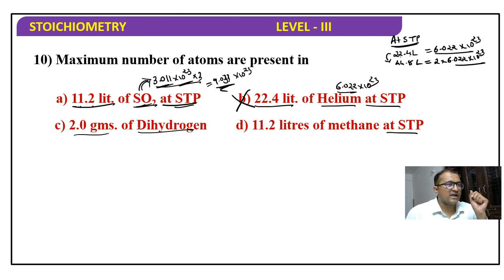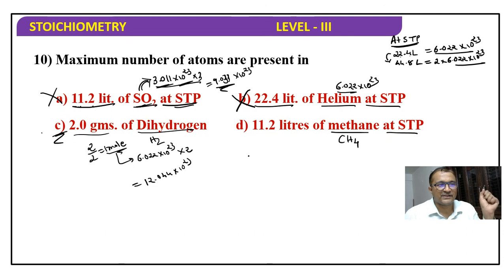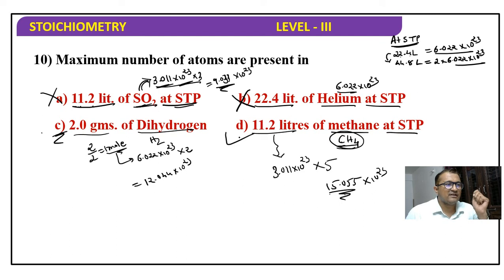Third option: 2 grams of hydrogen. Dihydrogen is H2, so 2 by 2 is 1 mole. And 1 mole has 6.022 into 10 raise to 23 molecules, with 2 atoms each. So 12.044 into 10 raise to 23, which is also bigger than A. But C is not the answer. Check D option: Methane CH4. 11.2 liters means 0.5 moles, that means 3.011 into 10 raise to 23 molecules. Each has 5 atoms total - 1 carbon and 4 hydrogen - multiplied by 5. So 15.055 into 10 raise to 23. This is the biggest value. So D option contains the maximum number of atoms.